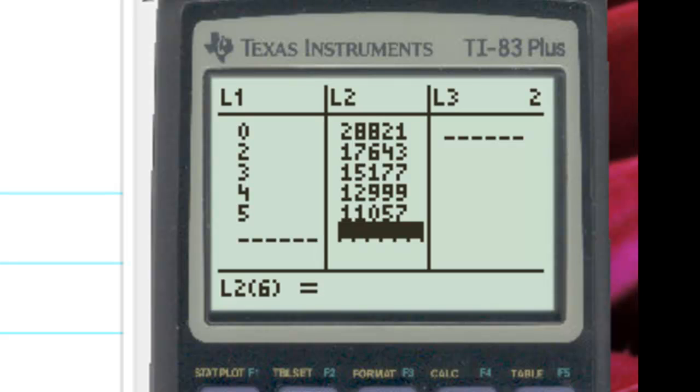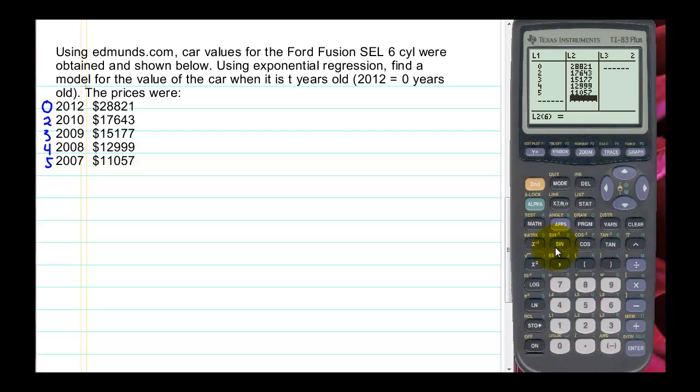And we might want to look at a scatter plot at this to make sure that it does look like exponential decay. So to see a scatter plot, we need to turn on our stat plot for stat plot 1. So I need to select 1 and turn that on. And make sure that your scatter plot is selected. It is here.